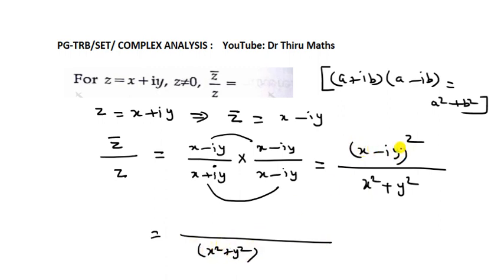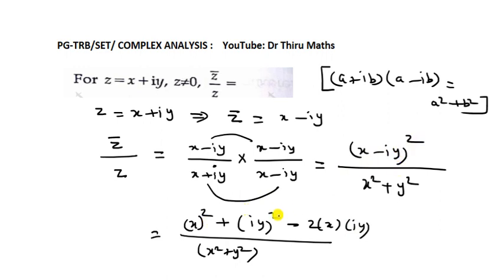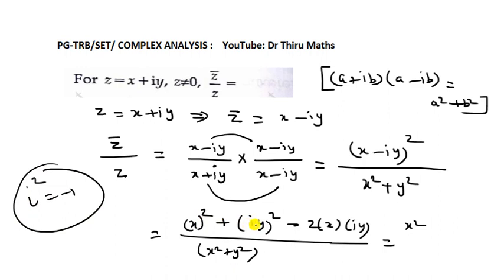For the numerator, we apply the (a minus b) whole square formula: a squared plus b squared minus 2ab. Here a is X and b is iY, so we get X squared plus i squared Y squared minus 2iXY. Since i squared equals minus 1, i squared Y squared becomes minus Y squared. So the numerator becomes X squared minus Y squared minus 2iXY, divided by X squared plus Y squared.